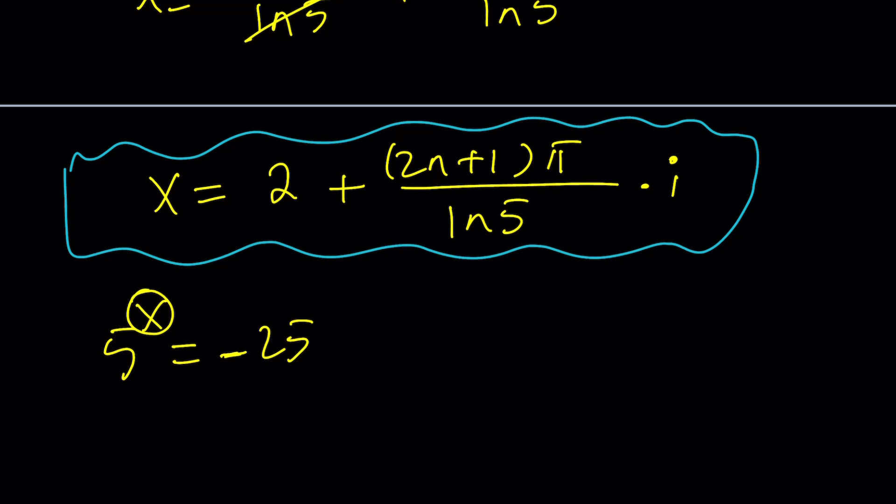But think about it. If we could make n equal to negative 1 half, then if it was allowed, then x equals 2 would work. But unfortunately, negative 1 half is not an integer, so we're not allowed to take that value. But just hypothetically speaking, that would be real cool.